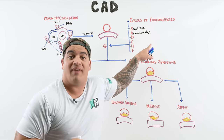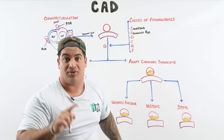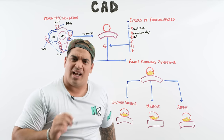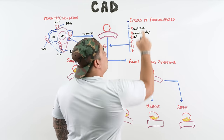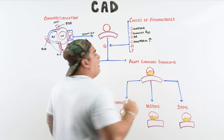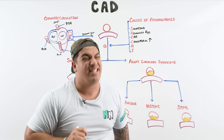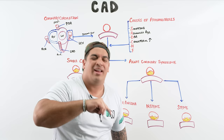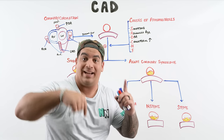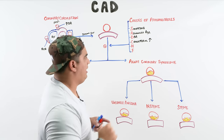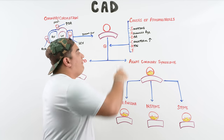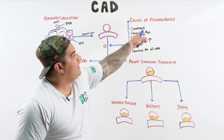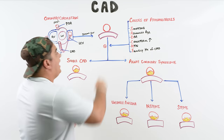For cholesterol, the real problems are high LDL and low HDL — a dyslipidemia. Hypertension and a family history of coronary artery disease round out the risk factors. These risk factors stimulate the vessel to become diseased and cause plaques to form within the coronary vessel.